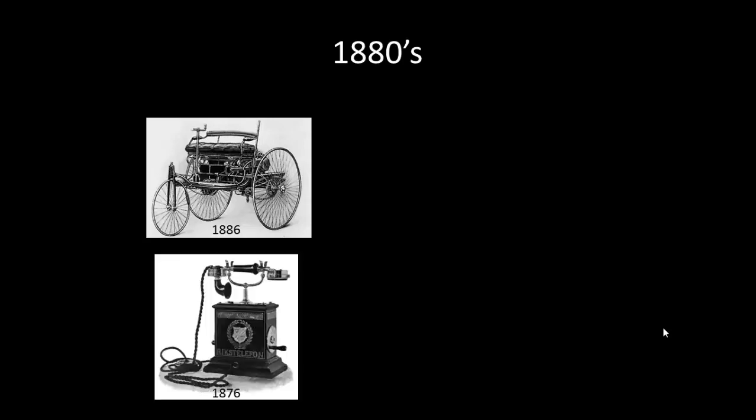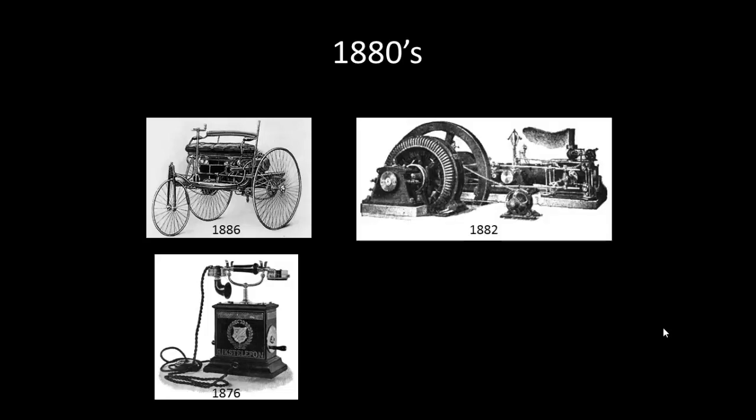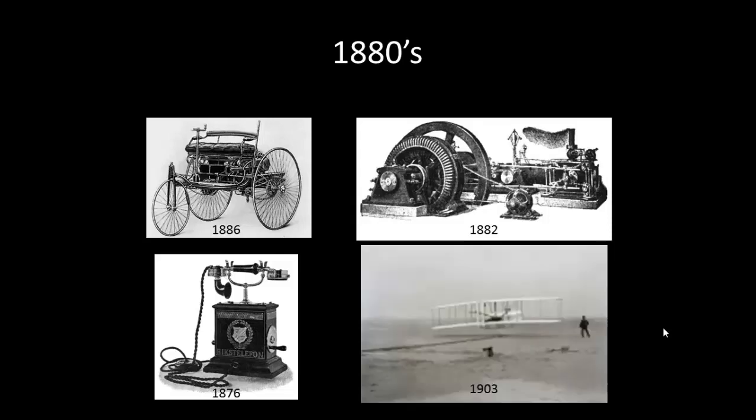There were no widespread automobile. The first manufactured automobile was in 1886 by Benz. Telephones were just invented, so there's telegraphs but not telephones. Widespread electrical generation started coming in in 1882 and people didn't think you could fly in any controlled manner until 1903.